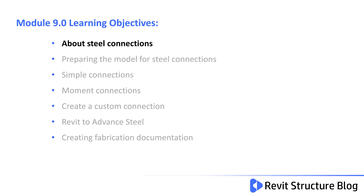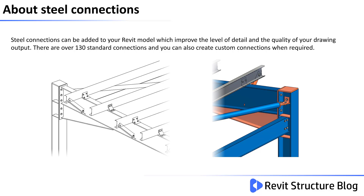Welcome to Module 9. In this module you learn about steel connections with Revit. Steel connections can be added to your Revit model, which improves the level of detail and the quality of your drawing output.